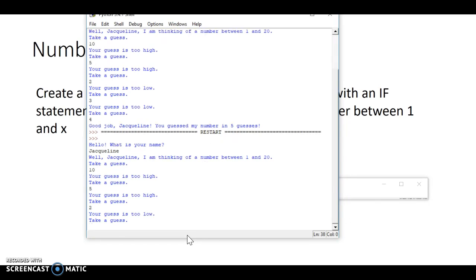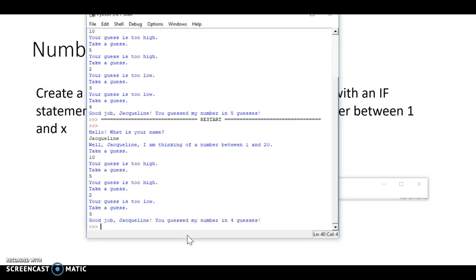Your guess is too low, so that means it's between 2 and 5, so 3. Good job, you guessed it in 4 guesses. OK, so that's how the game works.